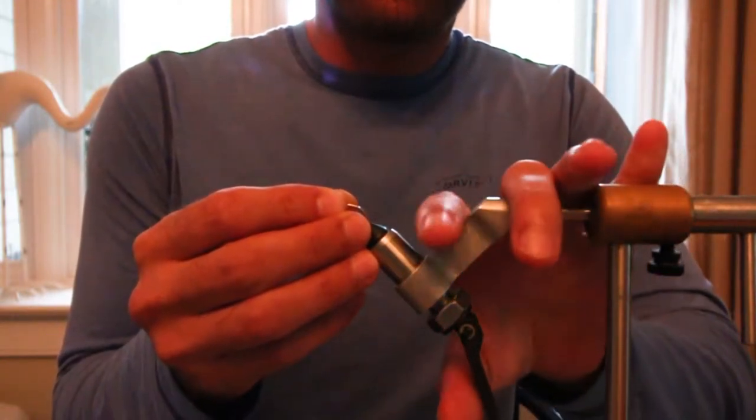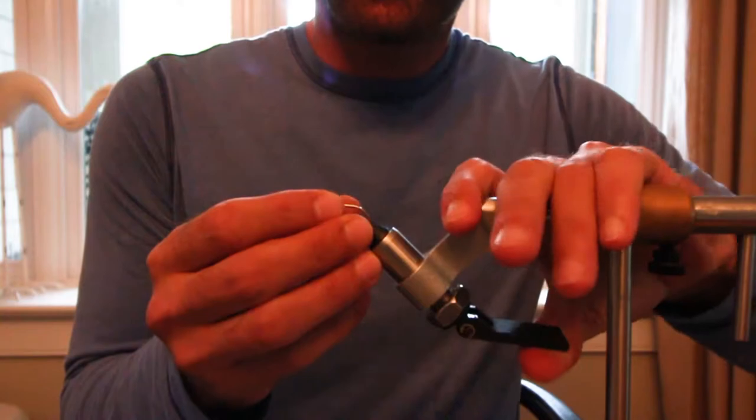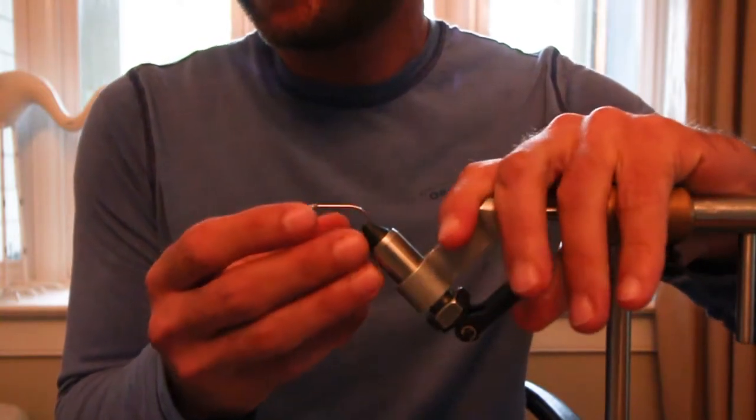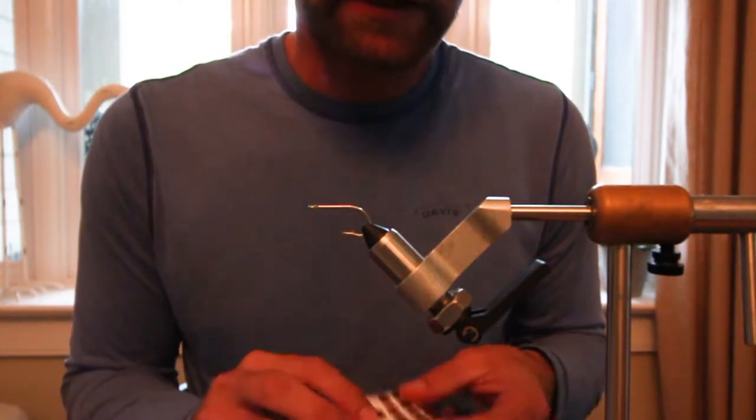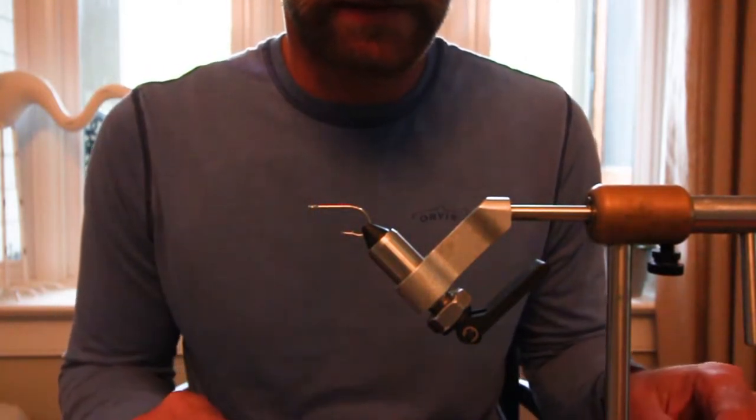It's a pretty simple fly. We've just got three different colors of EP. I'm using a white, an off-white, and then an orange for the gills, and some flash, and some red eyes. That's about it.